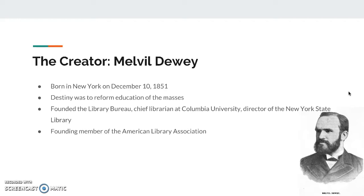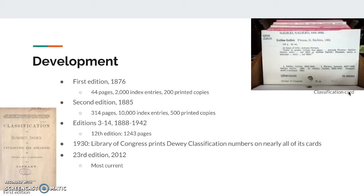Development: The first Dewey Decimal System booklet was published in 1876. It was 44 pages long, had 2,000 index entries, and had 200 copies. Nine years later, in 1885, the second edition was published. It had 314 pages, 10,000 index entries, and 500 printed copies.